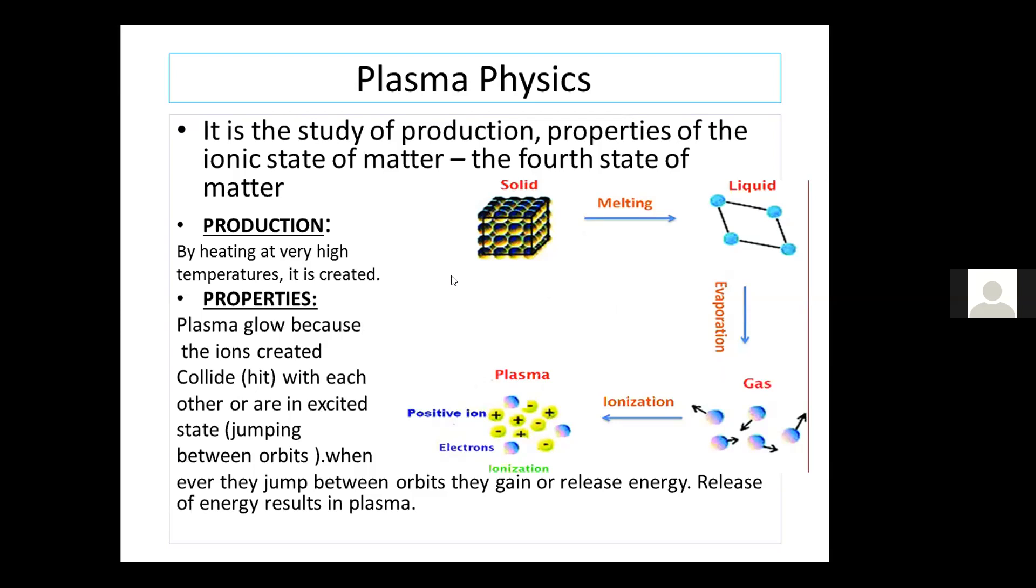The properties of plasma: they glow because ions created collide with each other or are in excited state, that is jumping between orbits. Whenever they jump between orbits they gain or release energy. Release of energy results in plasma glow. You will discuss more about it in next physics and chemistry lectures.